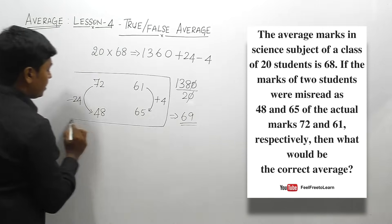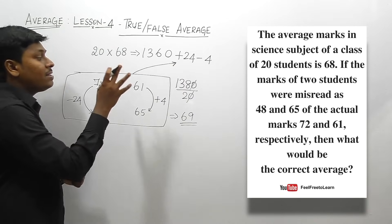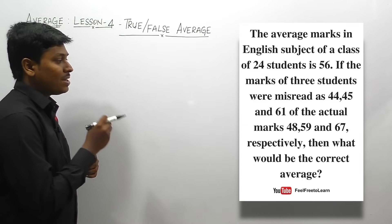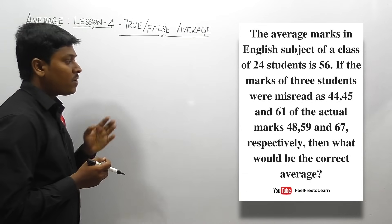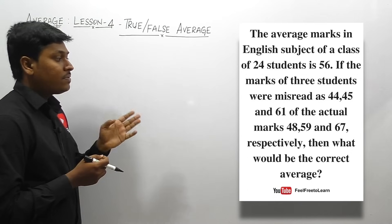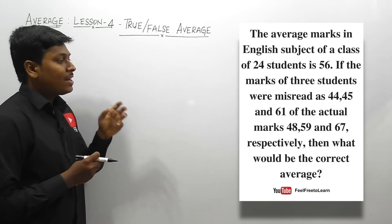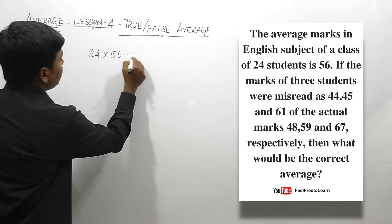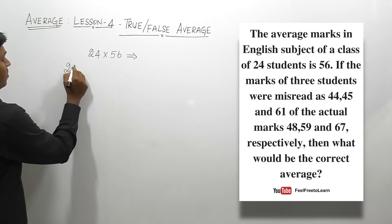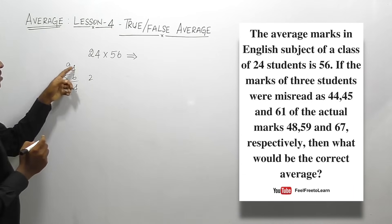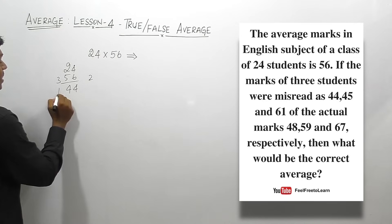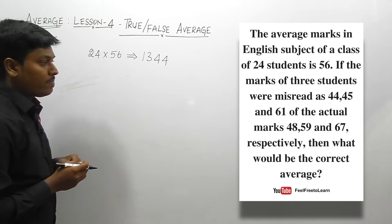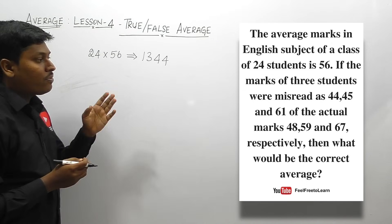The most important step is determining whether to add or subtract from the total marks. Question number five: the average mark in science for a class of 24 students is 56. If the marks of 3 students were listed as 44, 45, and 61 but the actual marks were 48, 59, and 67, find the correct average. Total marks = 24 × 56 = 1344.